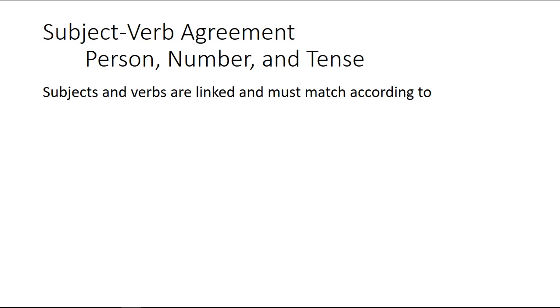Next part, subject verb agreement. Subjects and verbs are linked and must match according to person. So here's first person subject verb agreement and you're going to recognize this. I am, second person, you are, third would be she is. So that's subject verb agreement according to person.